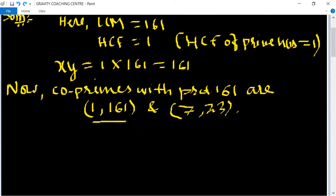In the first pair, 1 is not a prime number, so we can't take this pair. The second pair is (7, 23). Both numbers are prime, so we can take X equals 23, because X is greater than Y, and Y equals 7.